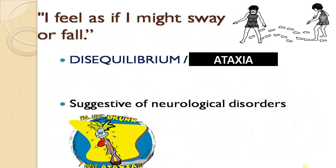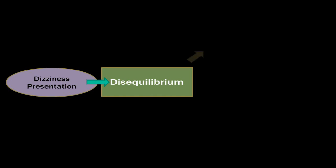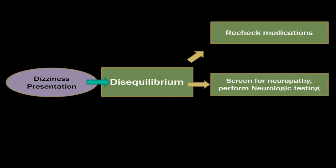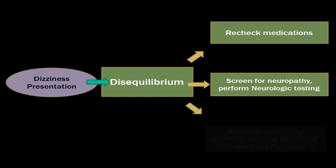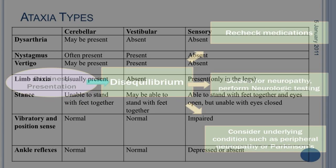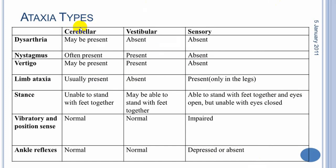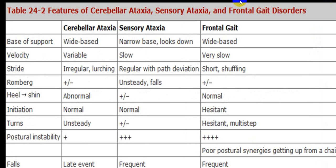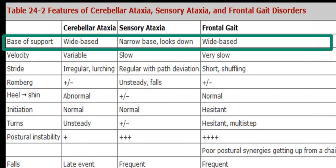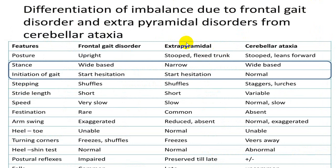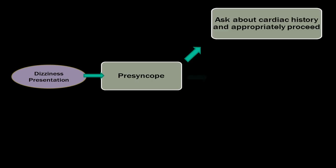For ataxia: also try to rule it out. The person complains of disequilibrium; recheck medicines, screen for neuropathy and neurological findings, and consider underlying conditions including Parkinson's. Three common groups producing ataxia: cerebellar ataxia — very frequently because of central causes; vestibular ataxia — ear problems; and sensory ataxia — due to severe peripheral neuropathy. There is also frontal ataxia, extrapyramidal ataxia, and cerebral ataxia.